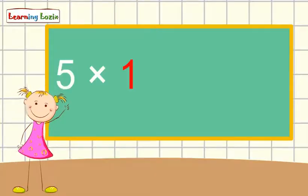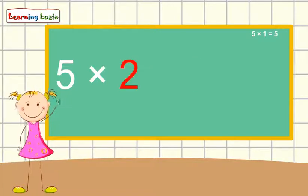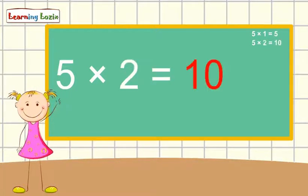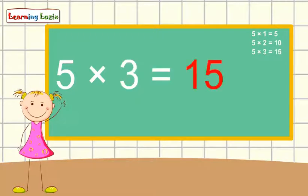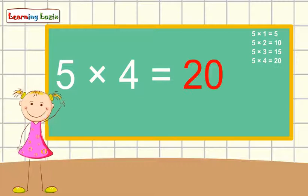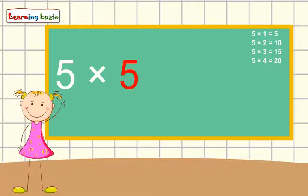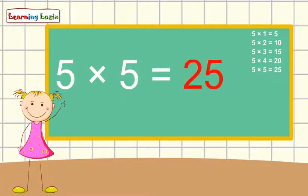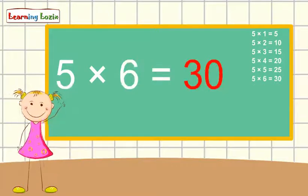Five times one is five, five times two is ten, five times three is fifteen, five times four is twenty, five times five is twenty-five, five times six is thirty.